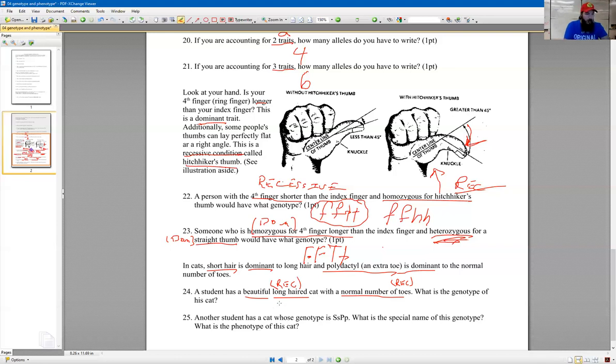So if you've got a long haired cat, we use lowercase little s's. I like to do them in cursive. That way you can tell the difference between little s's and big s's. And normal number of toes. So that's P for polydactyly. Normal number of toes is recessive. Long hair is recessive. And then you just put them together.